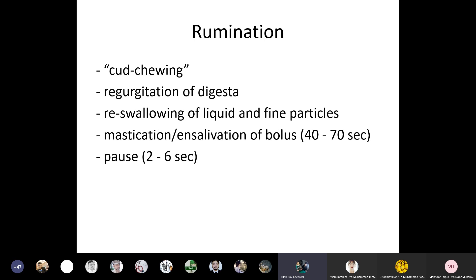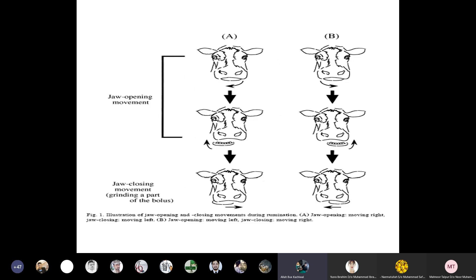The movement of the jaw is vertical to grind food in the mouth. The lower jaw moves vertically to the right side and then to the left side, re-chewing the cud and grinding it between the molars. This process takes place for 40 to 70 seconds, then a pause of 4 to 6 seconds, then grinding resumes. This continuous process may take place for up to 4 to 6 hours after eating.